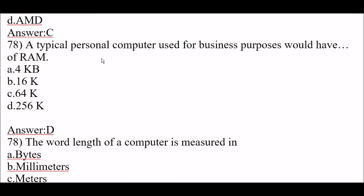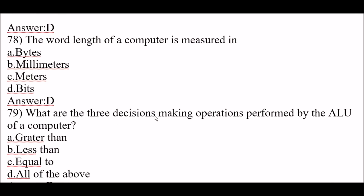Next question: a typical personal computer used for business purposes would have option D, 256 KB of RAM. Next question: the word length of a computer is measured in bits — option D.